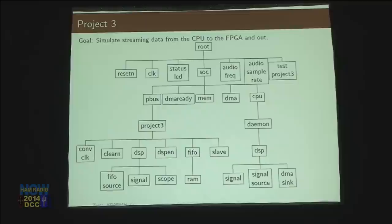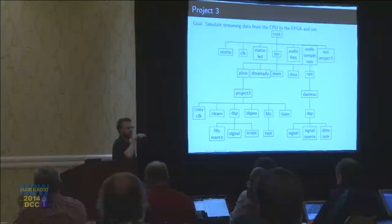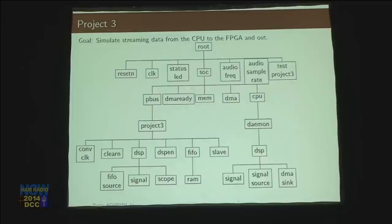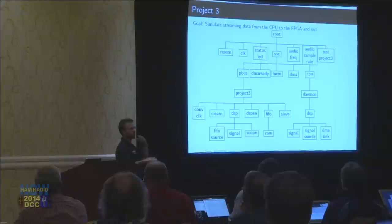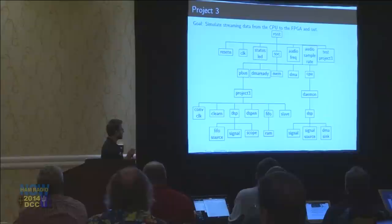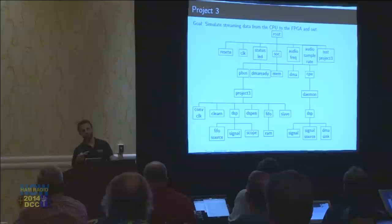Up here, most of the stuff is the same. I've added a new thing — the audio frequency slider, a virtual slider bar that we're going to send through. On the system-on-a-chip, we're going to add a new master called the direct memory access controller, and a new slave which is a system-level memory. We'll see how these all interconnect. We're also going to look at running a DSP flow graph on the processor, so now we have two flow graphs running in unison.